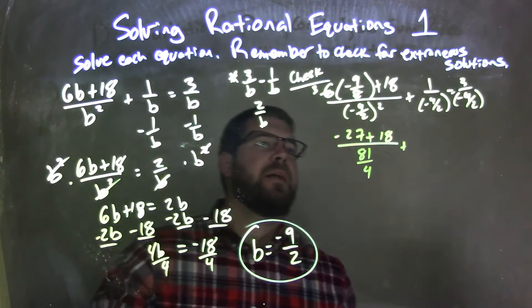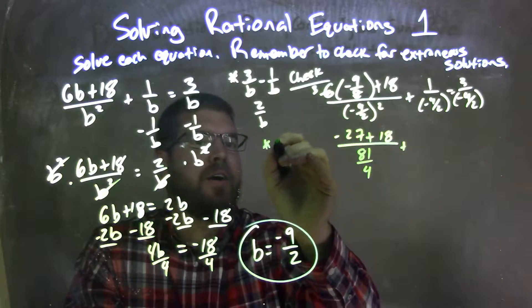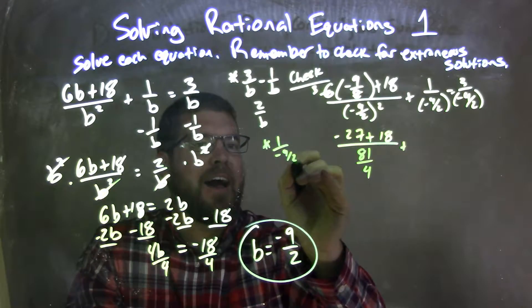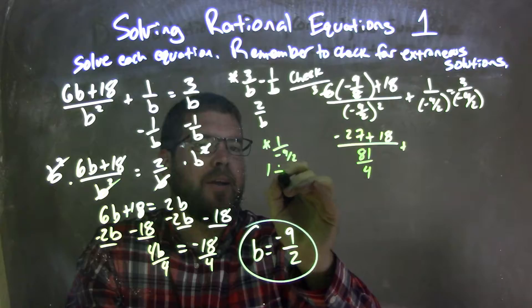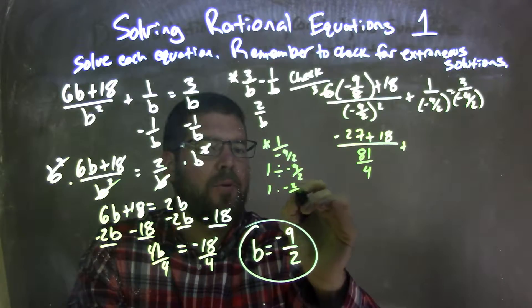Plus, okay, now a little note here. That 1 divided by negative 9 halves is the same thing as 1 divided by negative 9 halves, which is 1 times negative 2 over 9, and 3 over 9, which makes it easier to see.